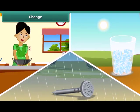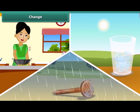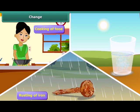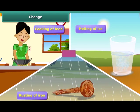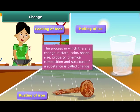We observe many changes. Some examples of changes in our daily life are cooking of food, rusting of iron, and melting of ice. Change is a process in which the properties like state, color, shape, size, chemical composition, and structure of a substance is altered.